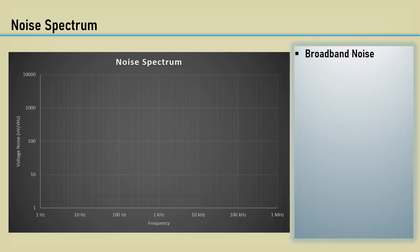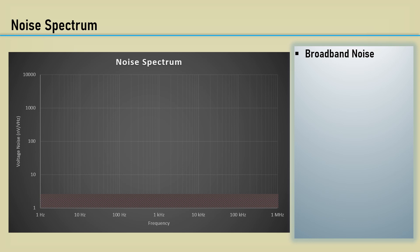Let's look at the noise spectrum. Broadband noise, as its name implies, exists across the entire band. It's thermal noise and is often called white noise or Johnson-Nyquist noise.